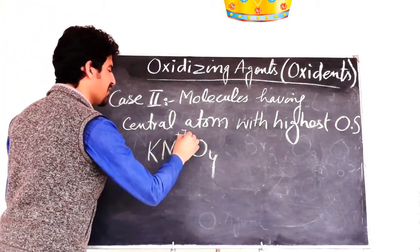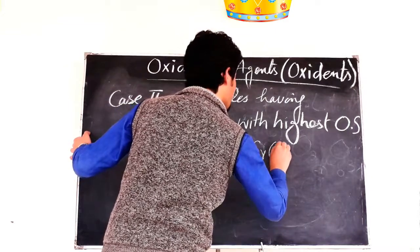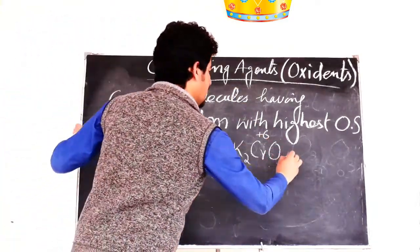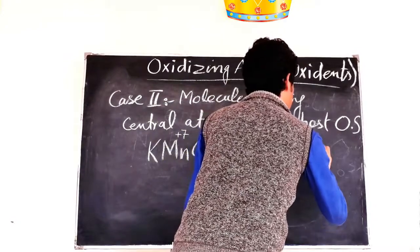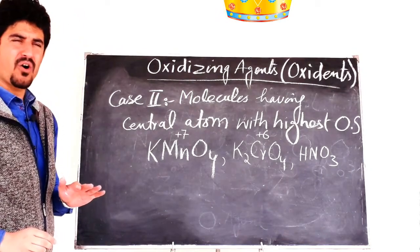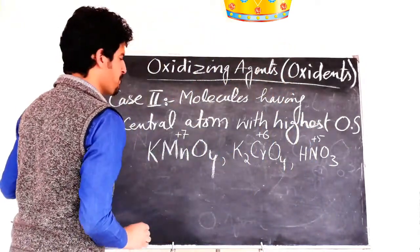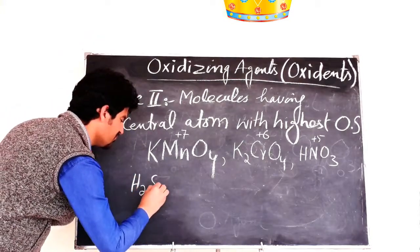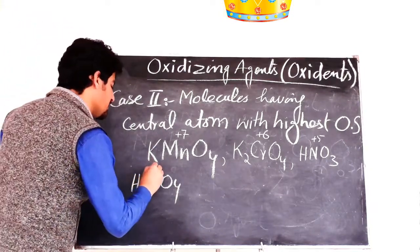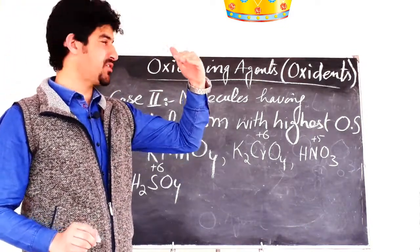In KMnO4, manganese is at the plus 7 oxidation state. In K2CrO4, chromium is at the highest oxidation state, plus 6. In HNO3, nitrogen has a minimum oxidation state of minus 3 and a maximum of plus 5 — here nitrogen is at plus 5. In H2SO4 (sulfuric acid), sulfur is at plus 6, which is its maximum oxidation state.